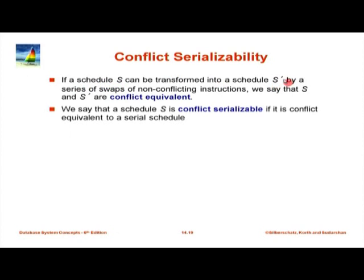If a schedule S can be transformed into another by a series of non-conflicting swaps, the two schedules are conflict equivalent. If schedule S is conflict equivalent to some serial schedule, we say it is conflict serializable. This is actually a very deep concept — it gives us a precise way to determine when a concurrent schedule is acceptable, something that previously people would just hope worked correctly.